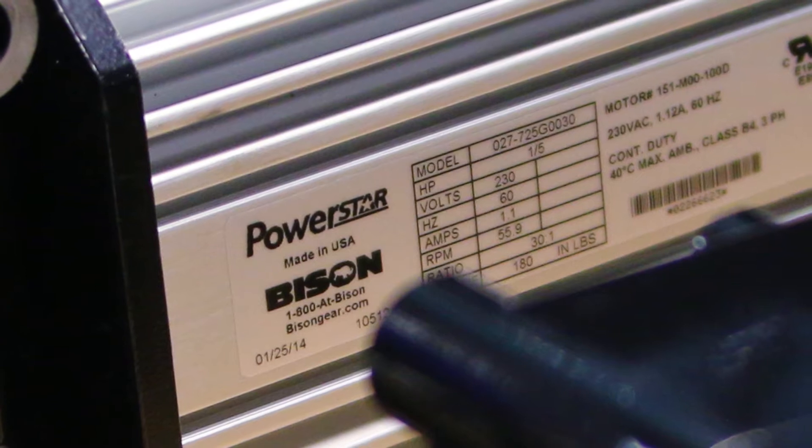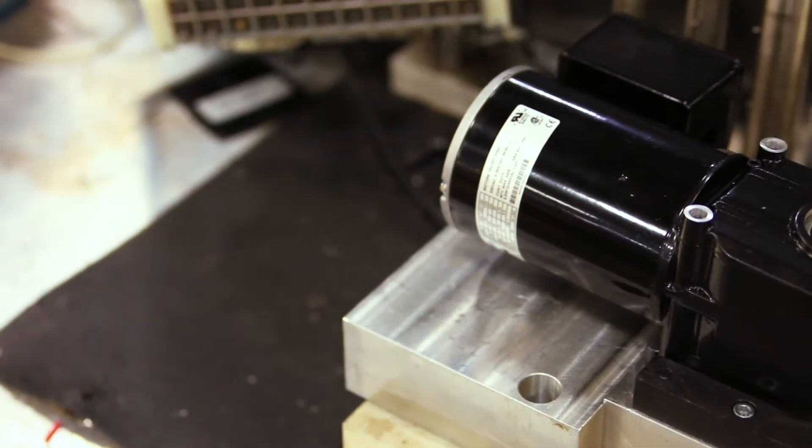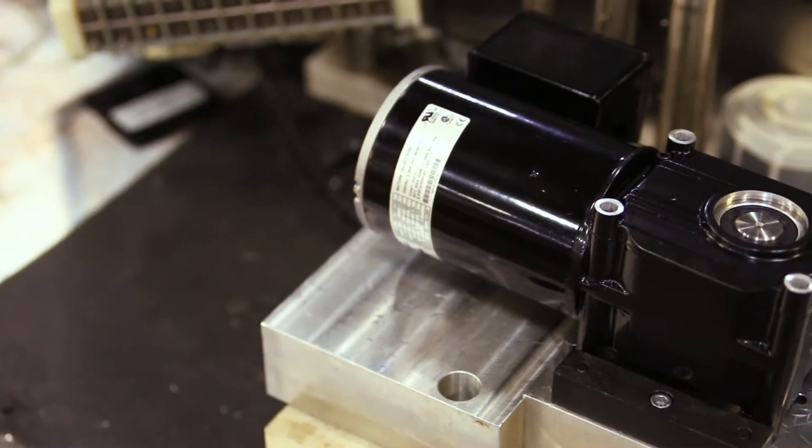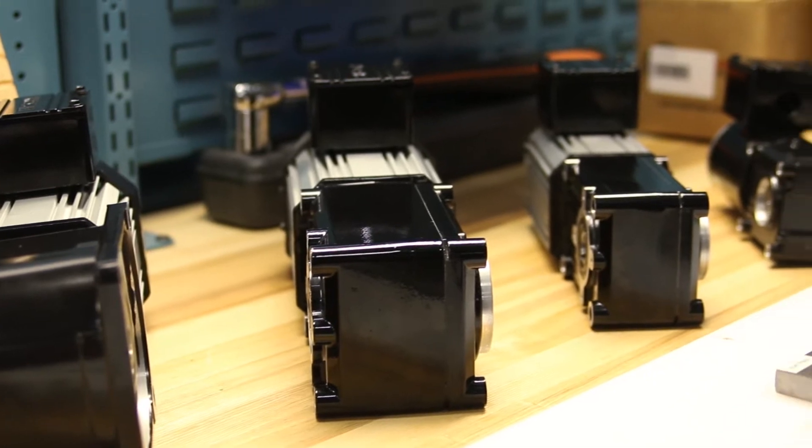The great thing about our PowerStar Hypoid line is the product's versatility. Our engineering team has worked on solutions for conveyors, gate operators, coffee grinders, specialty machine tool equipment, and many more.